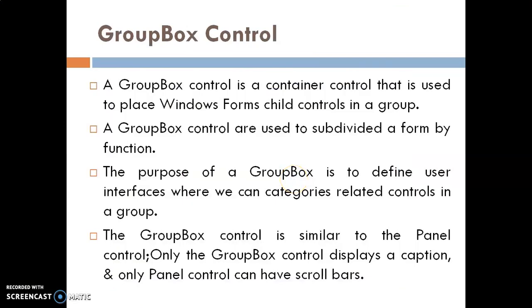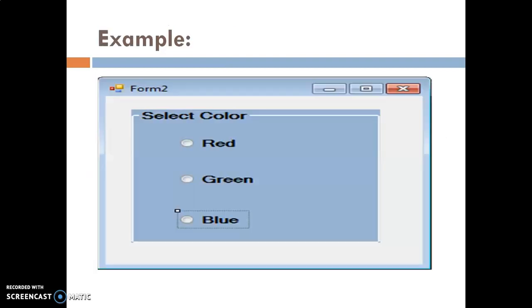The last control is the Group Box control. A Group Box control is a container control used to place window form child controls in a group. Group Box controls are used to subdivide a form by function. The purpose of a Group Box is to define user interface categories of related controls in a group. The Group Box control is similar to the Panel control, except the Group Box displays a caption while only the Panel control can have a scroll bar.